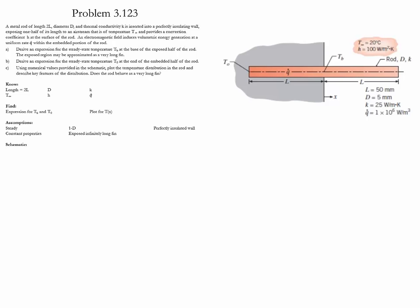We are taking this problem to be steady and one-dimensional. We're going to consider that the half in the wall is perfectly insulated. The second part that is exposed to the air is treated as an infinitely long fin. We have constant properties and no radiation.